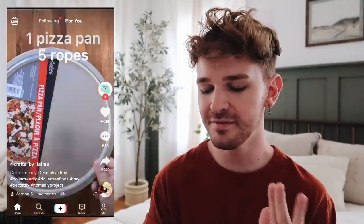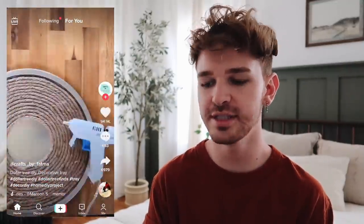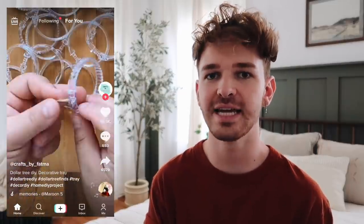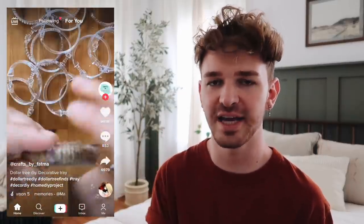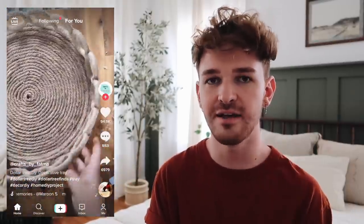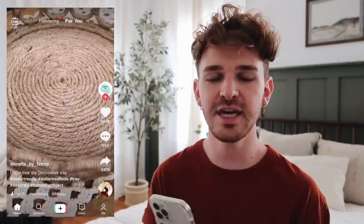And of course I had to save my favorite for last. This one is by Crafts by Fatma. She actually used a pizza pan, some ropes, and some jute cording along with some shower rings all from the dollar store and turned it into the cutest tray. I thought this idea was genius, so innovative. I love this project. It was a little bit time consuming but for the cost and the final result it is totally worth it.